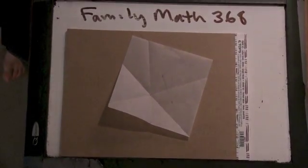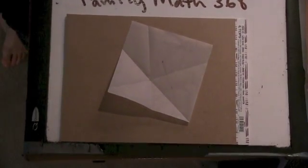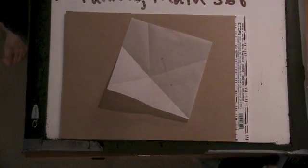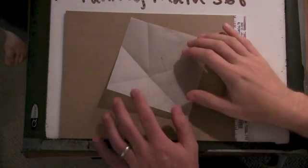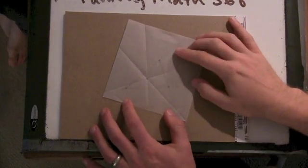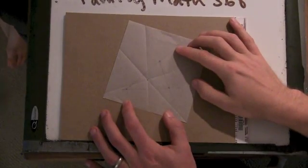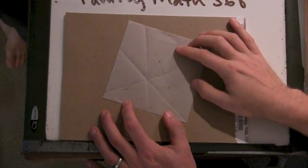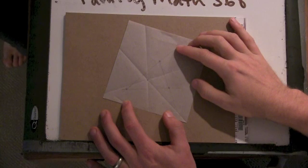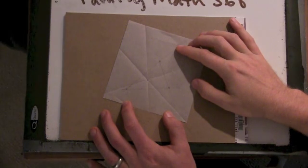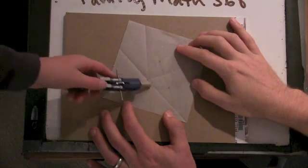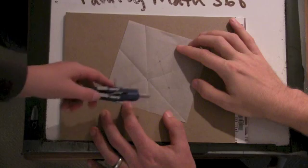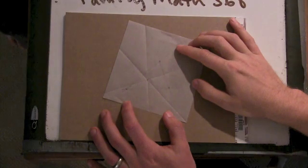Okay, so we were just talking about trying to understand why the place where the perpendicular bisectors intersect is the same distance from all three of the vertices. Well, you do have a lot of symmetry here — it cuts all the sides in half.